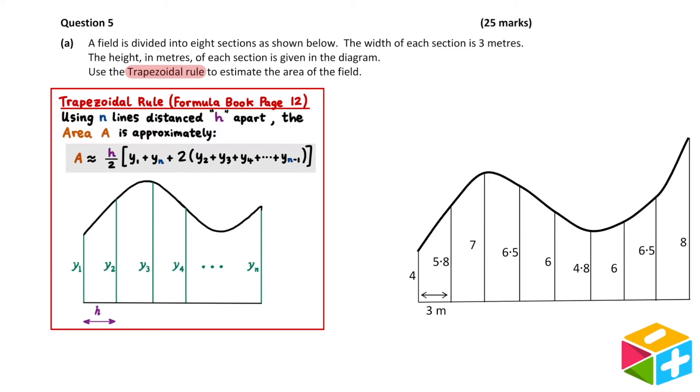The rule states that if we use n lines distanced h apart, the area A is approximately h over 2 times y1 plus yn plus 2 times y2 plus y3 plus y4 all the way to yn minus 1. There are quite a few letters in this formula. So let's have a stab at identifying what they might be in the context of our question.